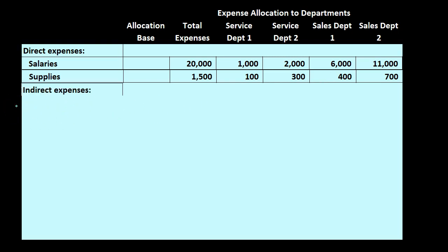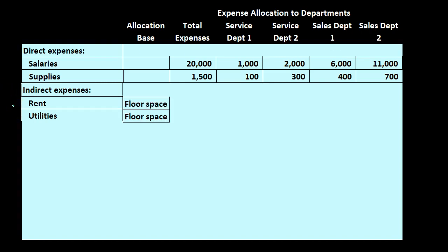Then we have the indirect expenses. Remember that indirect expenses are those we don't know how to allocate — we know the total but not where to allocate them. We're going to use rent and utilities as examples. We assume these four departments are in the same building; we pay rent and utilities on that building but we're not billed based on which department is consuming it, so we have totals that need to be allocated out. We can use an activity base to do so — a common example for rent and utilities would be floor space.